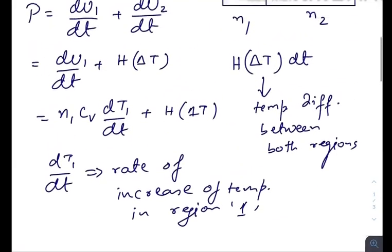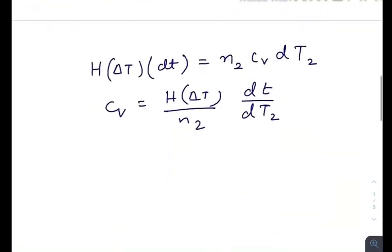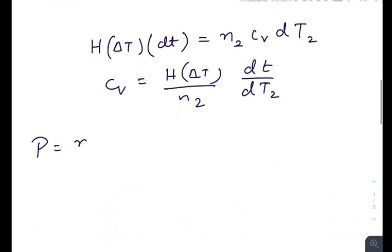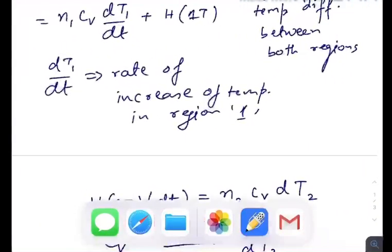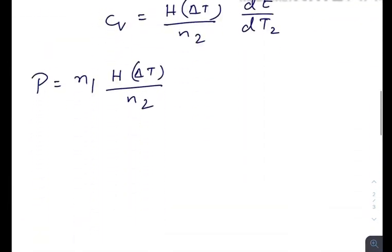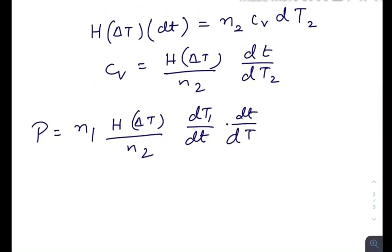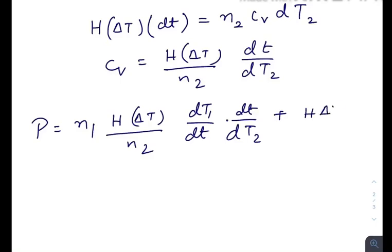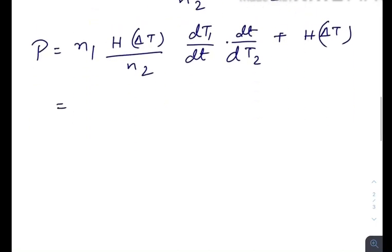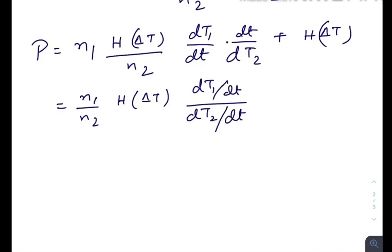Now we will just plug the value of Cv in the previous formula. That is n1 times Cv, so Cv is H·ΔT divided by n2, times dT1/dt plus H·ΔT. Now let's make this a little bit tidy: n1/n2 times H·ΔT times dT1/dt divided by dT2/dt plus H·ΔT.